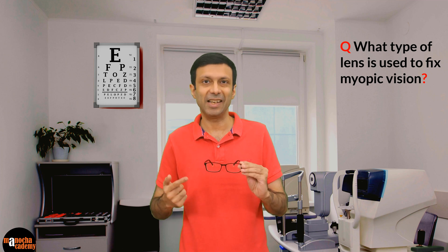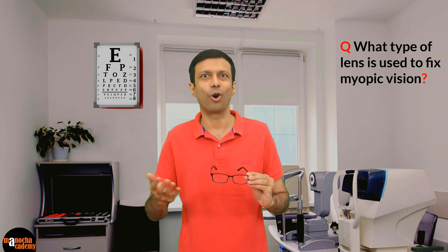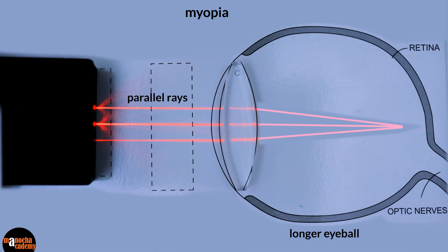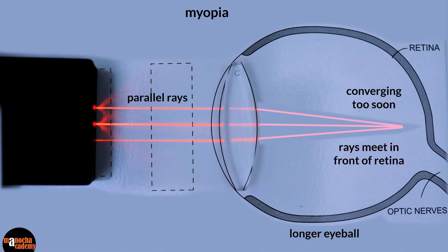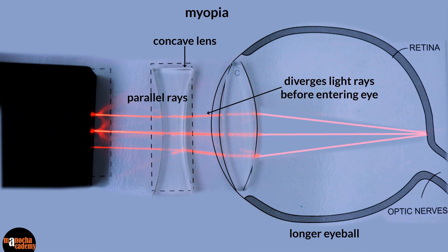So how do we fix myopia? We know we need eyeglasses or contact lenses, but what type of lens is needed — convex or concave? That's right, the correct answer is a concave lens. The problem in myopia is that the light rays are converging too soon, meeting before the retina. A concave lens is a diverging lens, so it diverges the light rays before they enter the eye, allowing the light to focus directly on the retina. The optician will prescribe concave lenses of the correct power so you can see far away objects clearly.